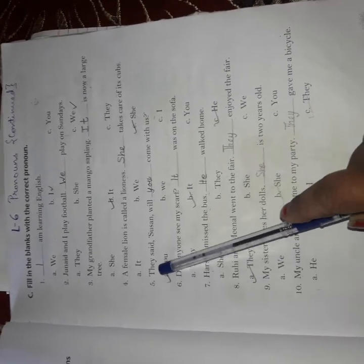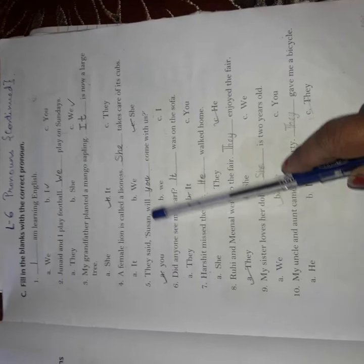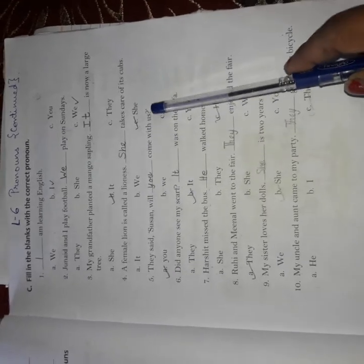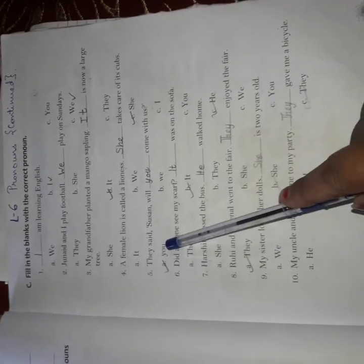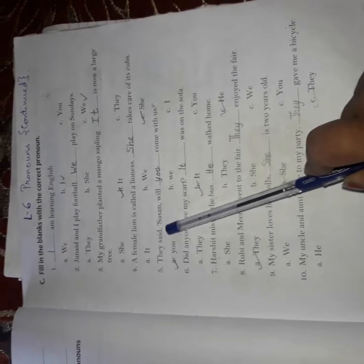Fifth point. They said, Susan, will Dash come with us. We are talking to another person. We are talking to the other person. We all are talking to the other person. You, we or I. They said, Susan, will you come with us?